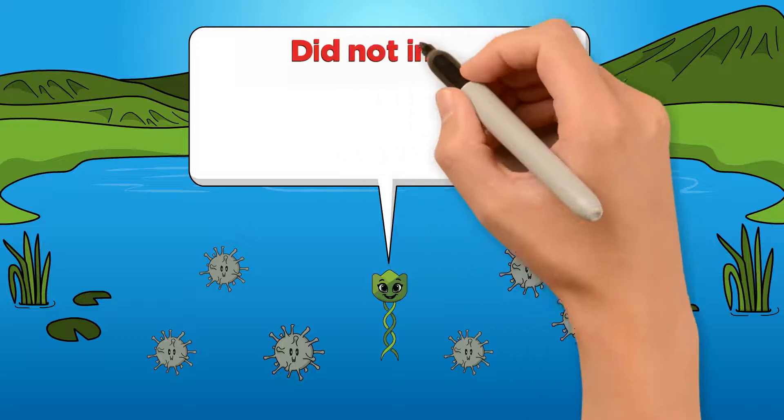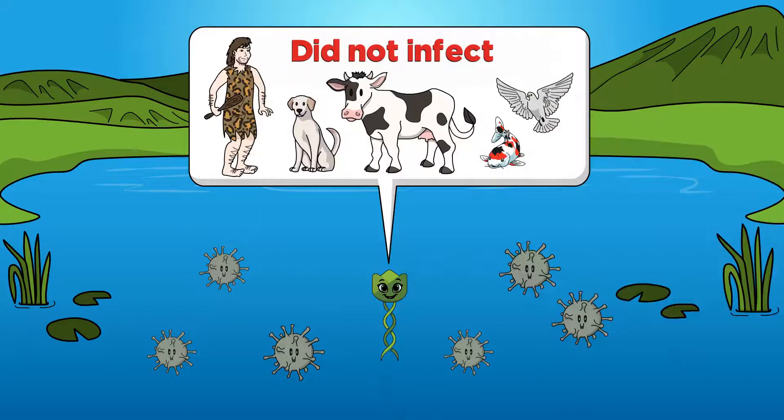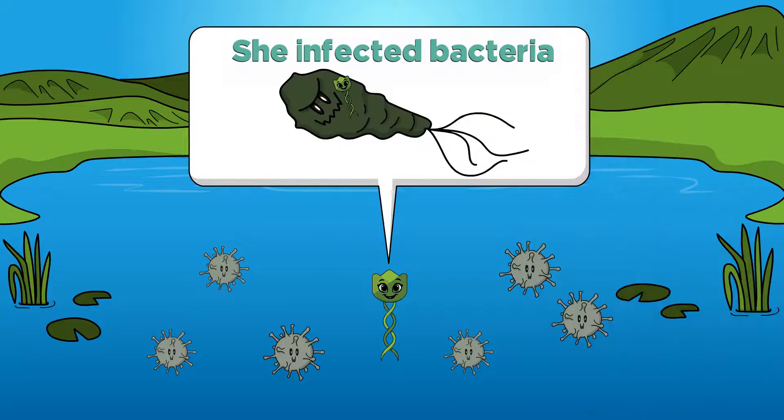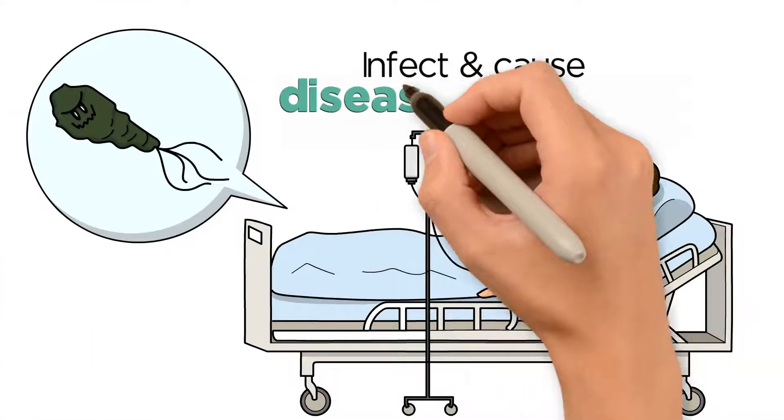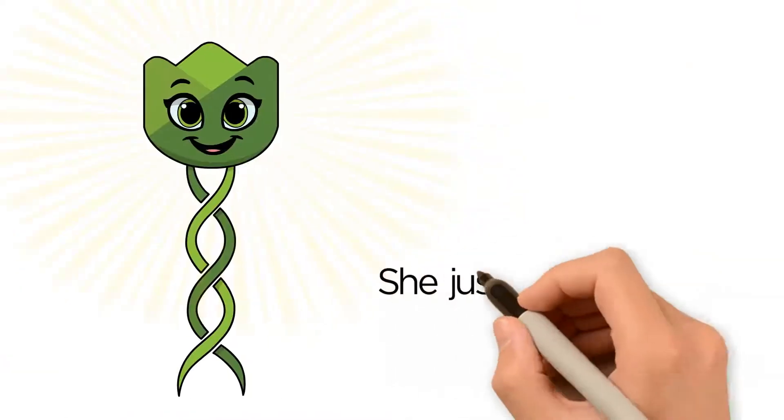Taylor's special ability was that she did not infect animals or humans. No, she infected bacteria. Not just any bacteria, but the bacteria that infect and cause disease in humans. She just needed to be discovered.